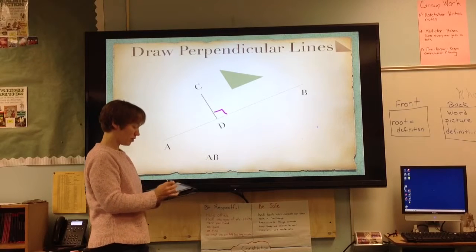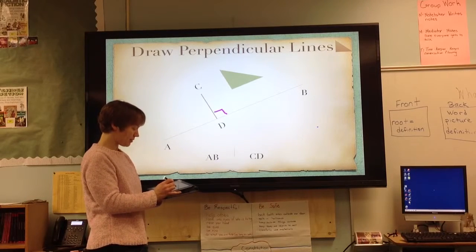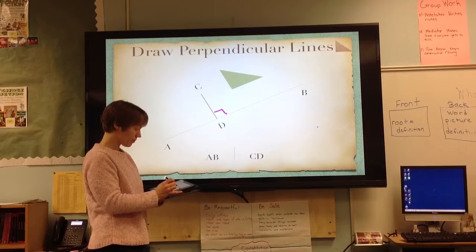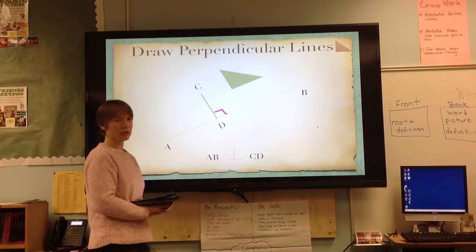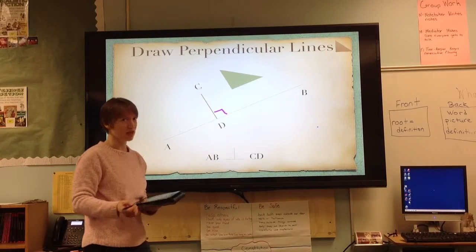A, B, which is a line segment, and C, D, are perpendicular. See how this shape is just like this shape. That's all for today.